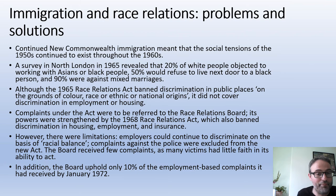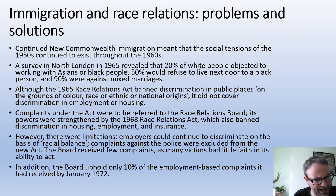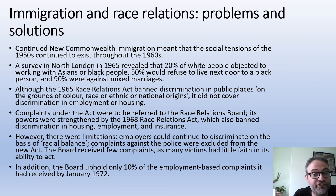Parliament passed the Race Relations Act in 1965 — the beginnings of trying to use the law to ban racial discrimination, extending to public places. But crucially, it was limited. It didn't cover housing, and it didn't cover employment — two hugely significant areas not covered under the law.